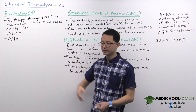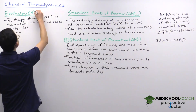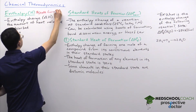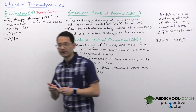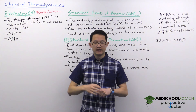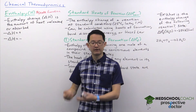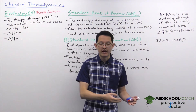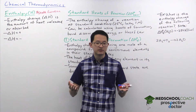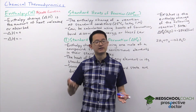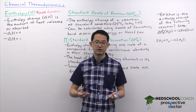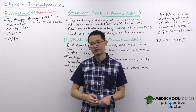One important thing to know about enthalpy is that it is a state function. As a state function, the value of enthalpy is independent of path. Your starting reactants will have some amount of enthalpy, and your products will have some amount of enthalpy. That amount does not depend on the path taken to get from the reactants to the products. This will have implications later when we're talking about how to calculate the enthalpy change of a reaction.